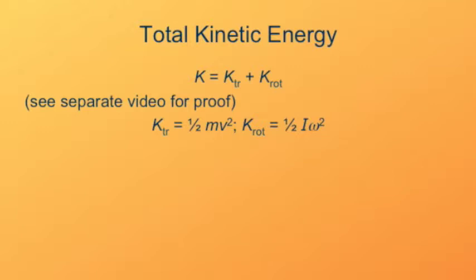We can express the translational component as 1/2 mv squared, where m is the mass of the object and v is the speed of its center of mass. The rotational contribution to the kinetic energy is 1/2 I omega squared.